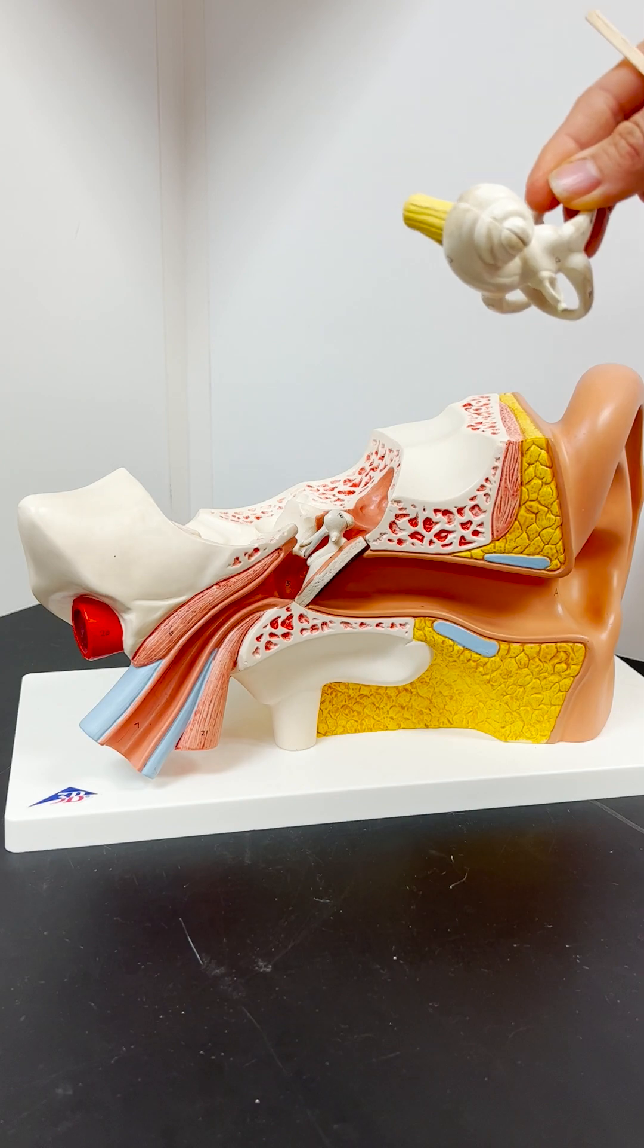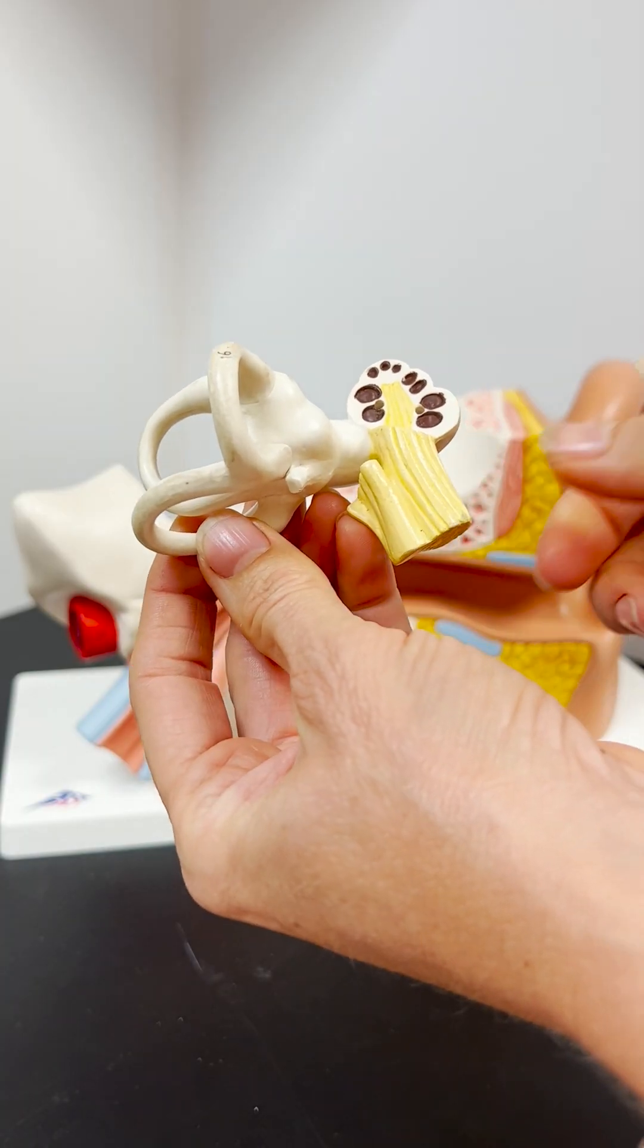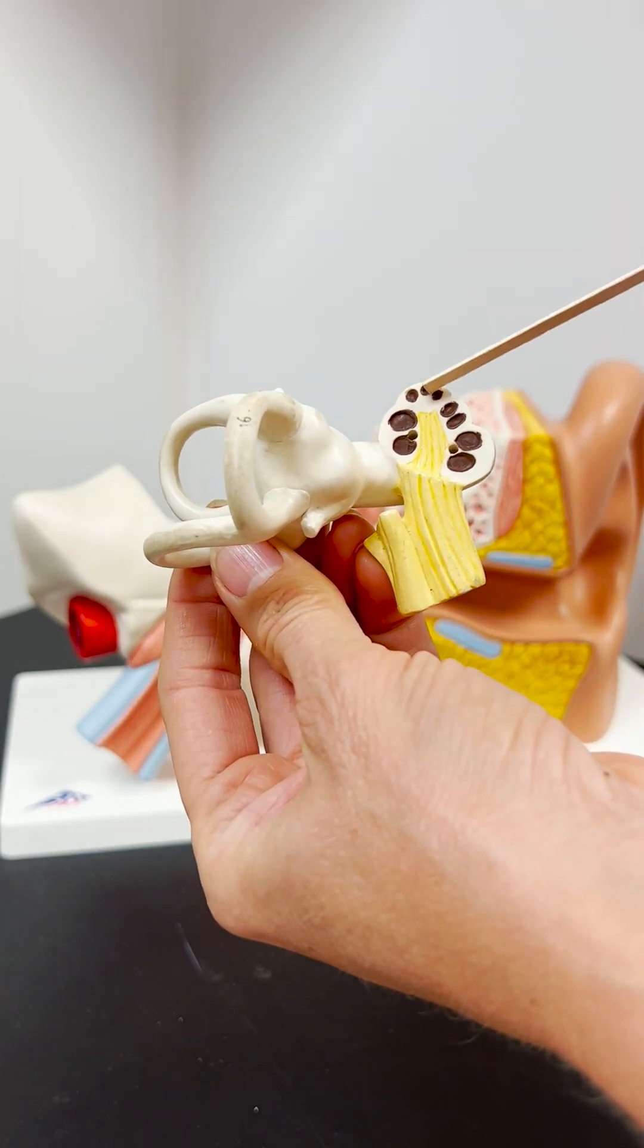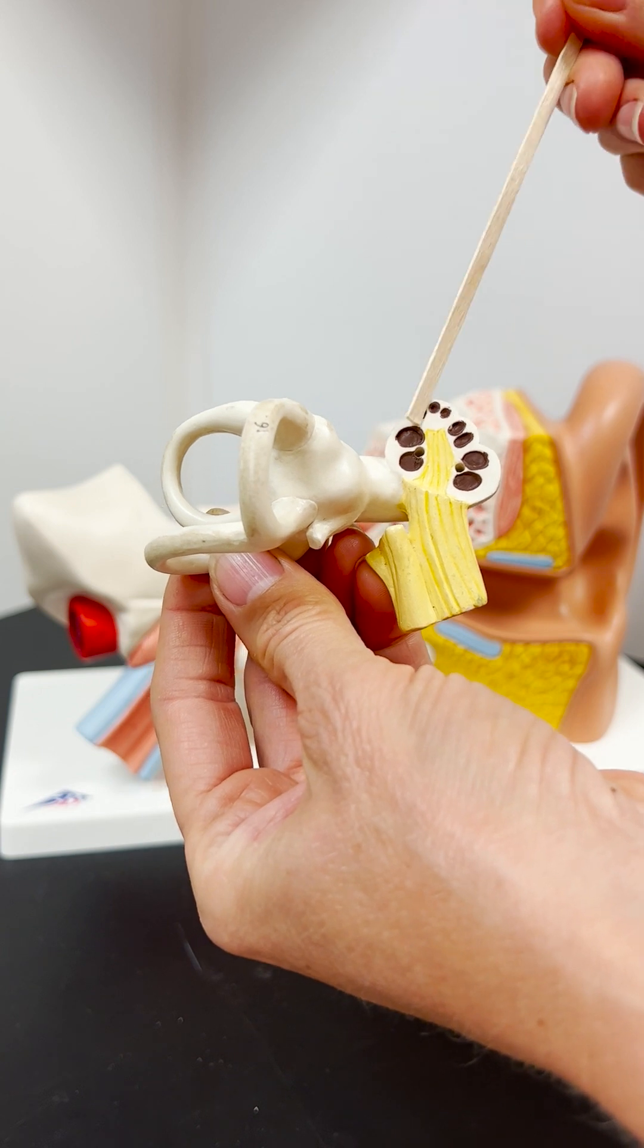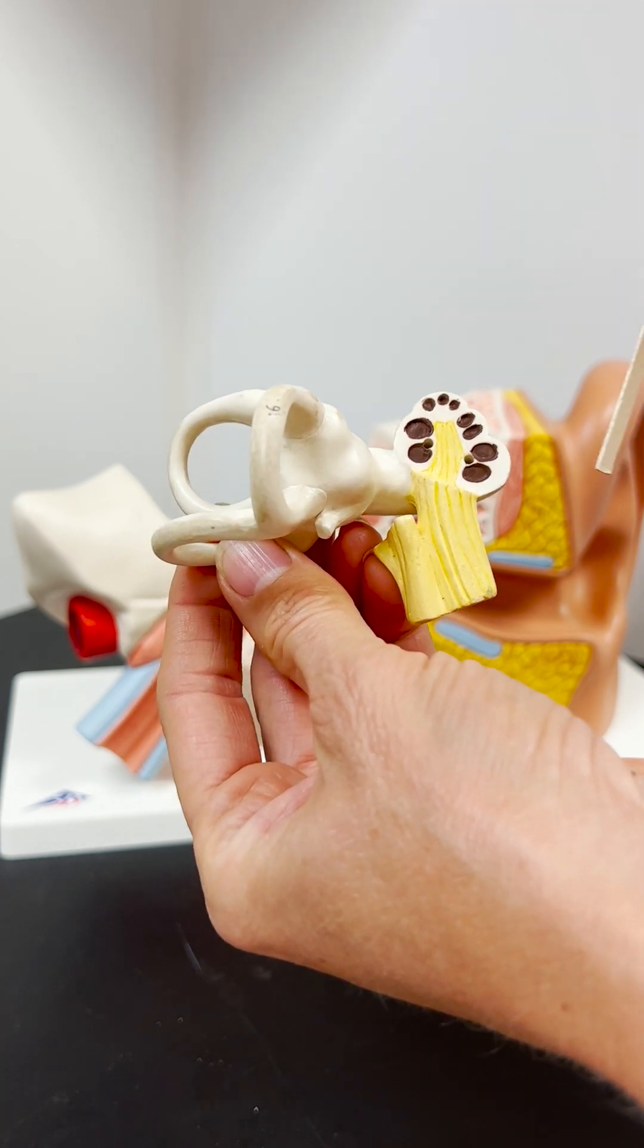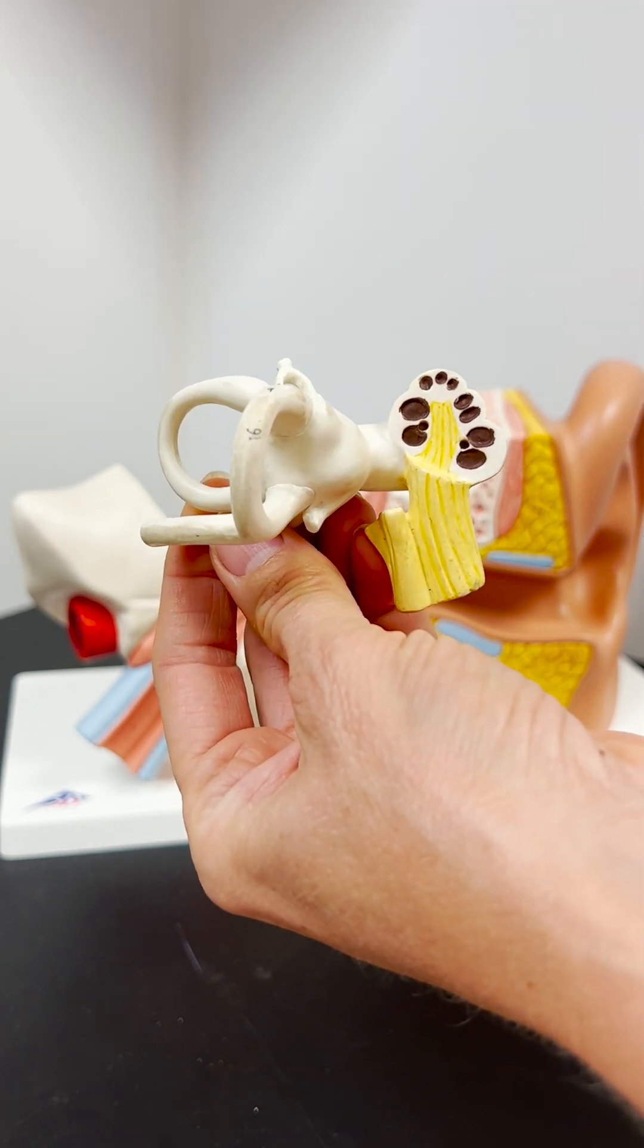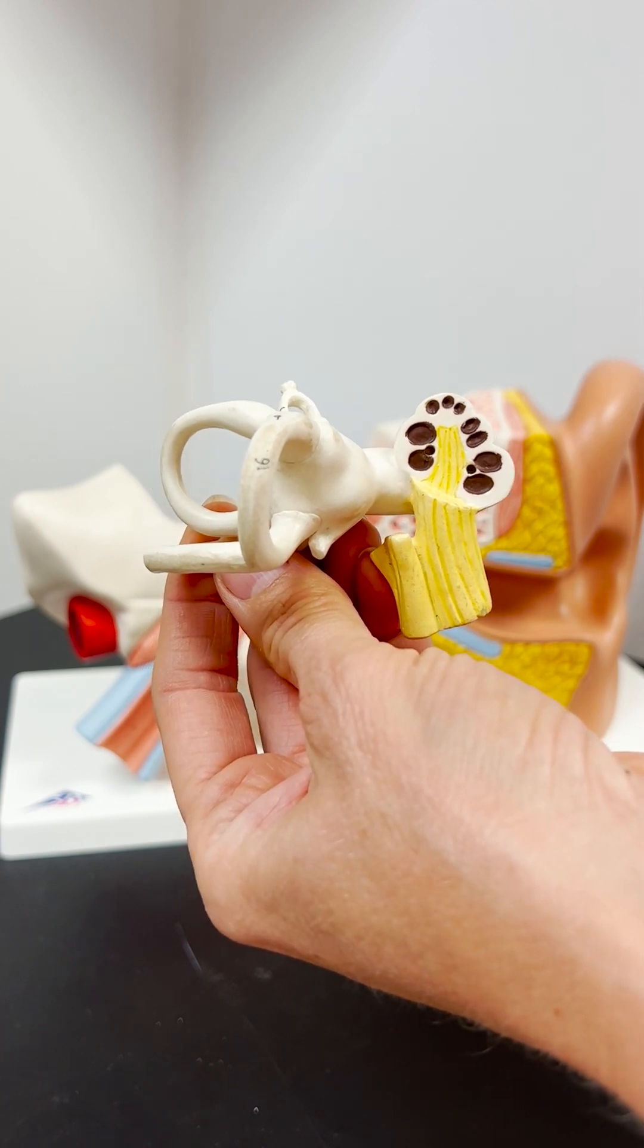If we open up the cochlea, the structure in the center of it creates a spiral, like a corkscrew, and that's called the modiolus.